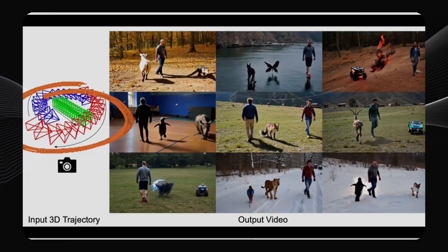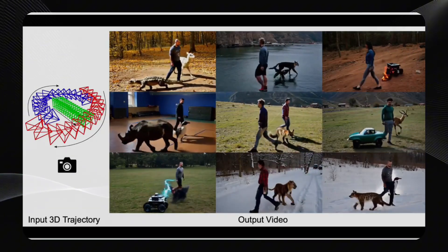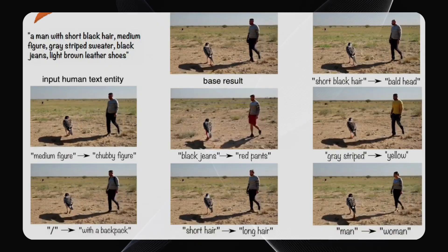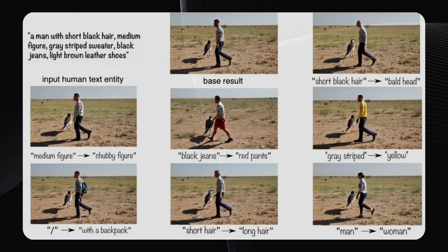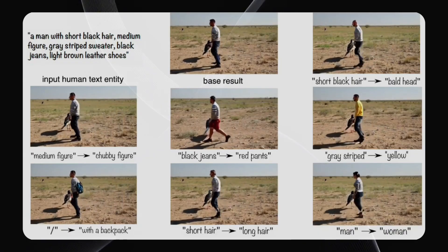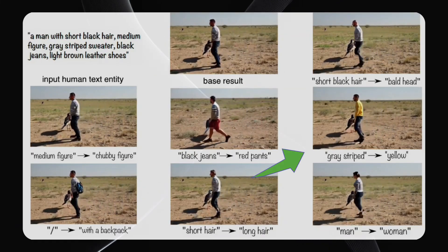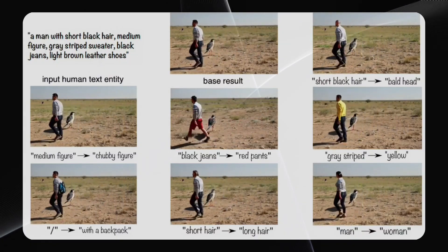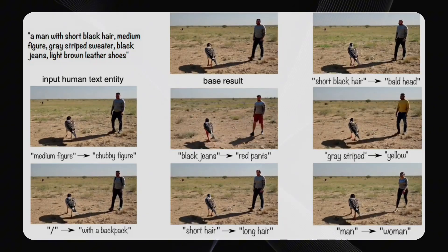Here's an insane example with three trajectories — three different objects each moving along their specified paths. And there's even more you can do. You can also edit specific things in the video, like a person's hair, clothing, or gender. If you prompt it with 'a man with short black hair, medium figure, gray striped sweater, black jeans, light brown leather shoes' and upload two trajectories for the man and a bird, you can then edit specific things further: change 'short black hair' to 'bald head,' swap the gray striped shirt for a yellow shirt, add a backpack, or even change the man to a woman. This is a super powerful feature for video editing — even the best video generators like Sora, Kling, or Runway don't have this level of fine-grained editing control. But with this AI, it's finally possible.